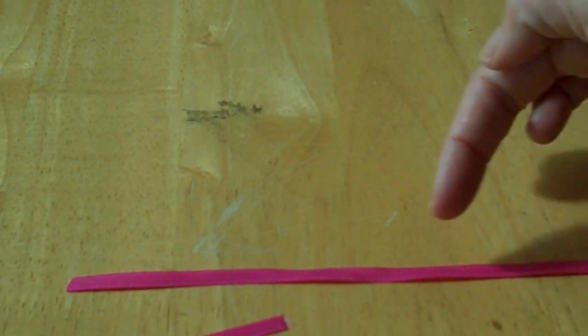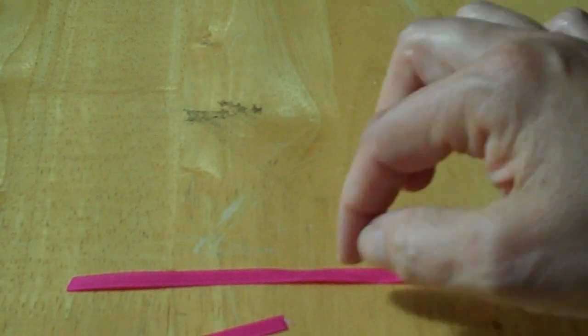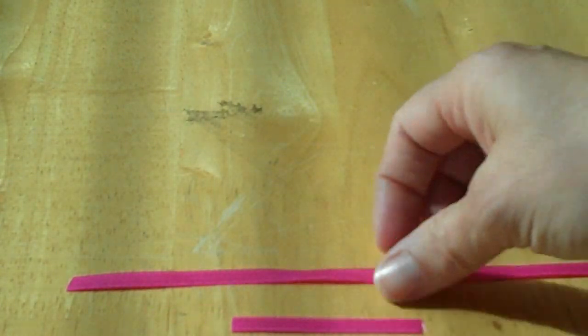So first you take a longer piece of ribbon, and this one will be the one that will go around your card, and this will be the actual tail part.